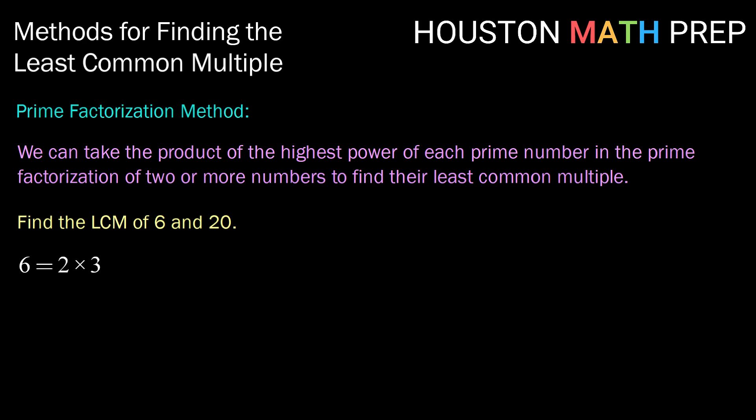Well, 6 has a prime factorization of 2 times 3, and 20 has a prime factorization of 2 squared times 5. So what we can see is if we take the highest power of each prime, that would mean 2 squared, since the highest power of 2 is here, times 3 times 5.